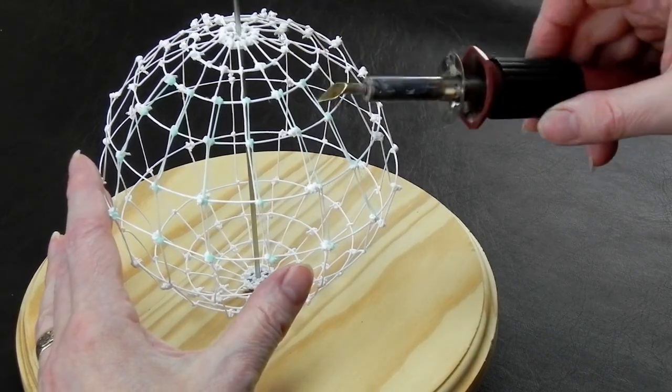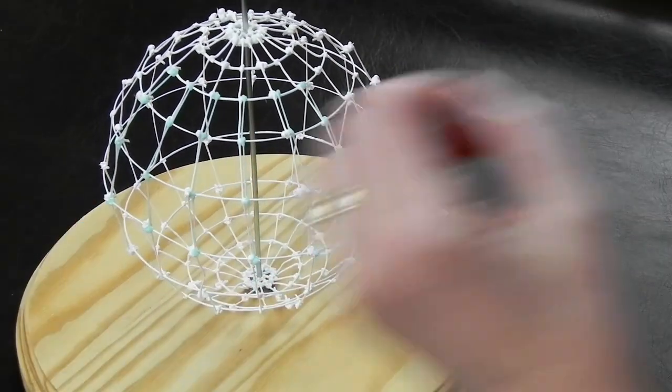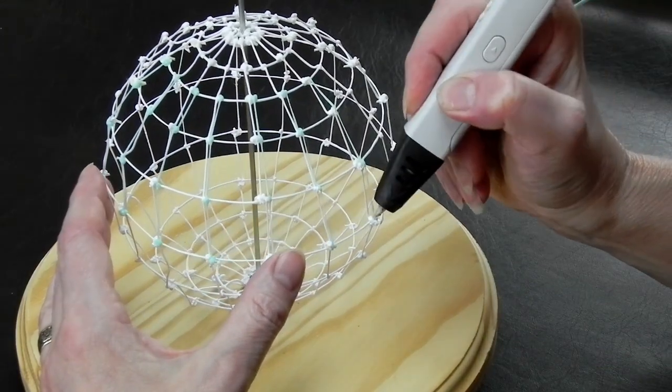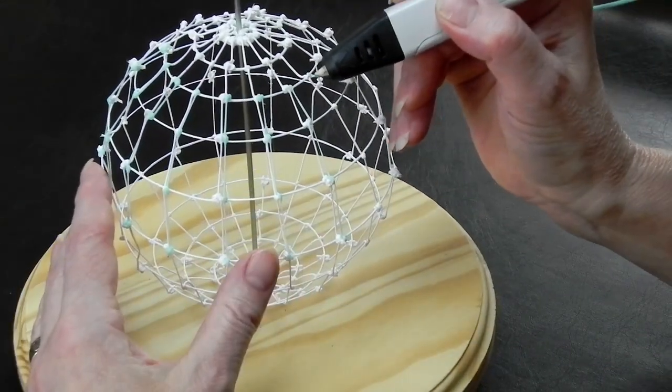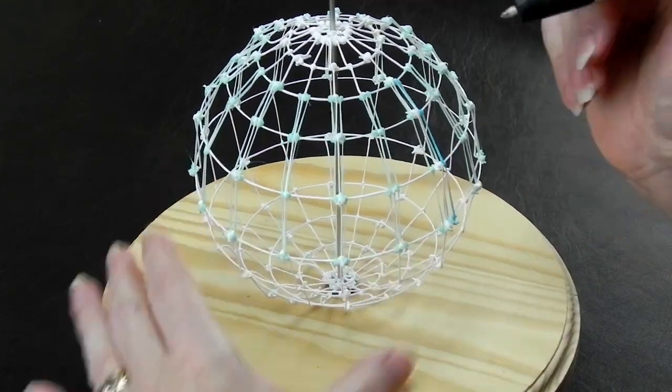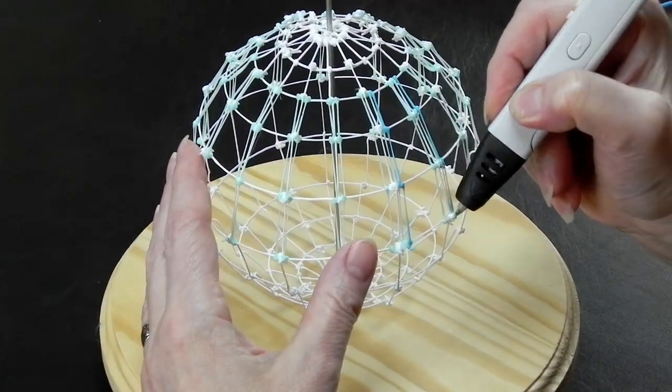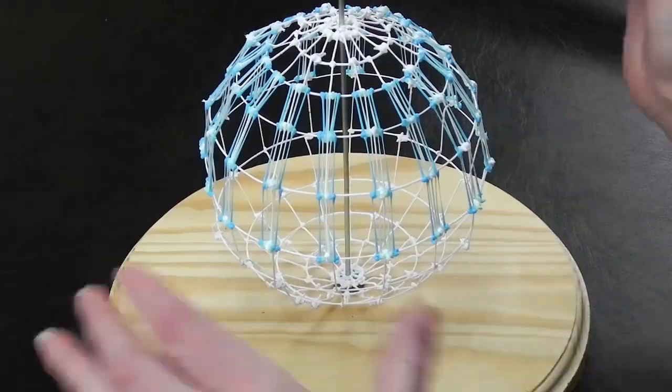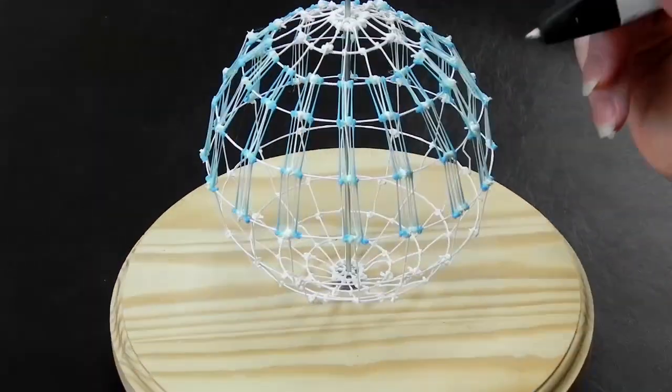The trick to making this work is not to work in the same spot long enough for the underlying network to heat up too much and melt and collapse. So that's why I'm rotating the ball around after each addition.